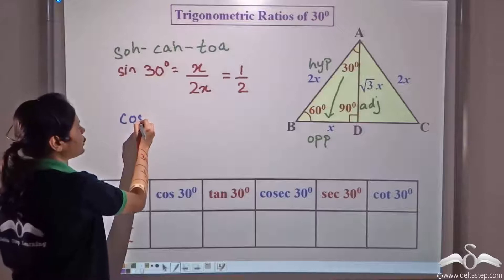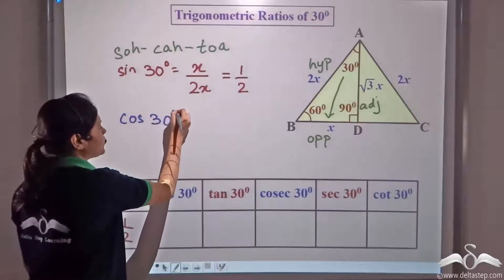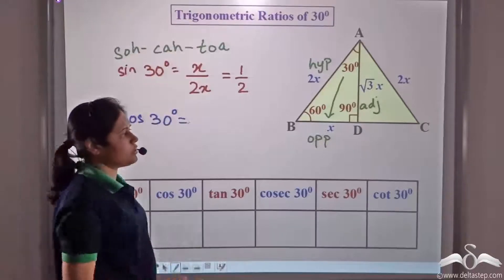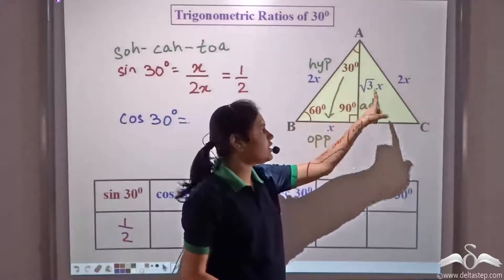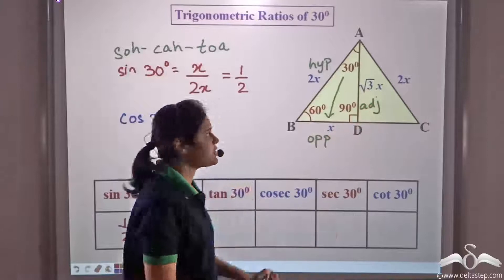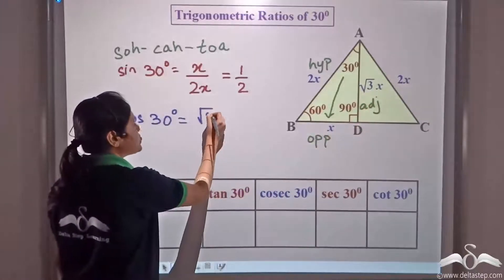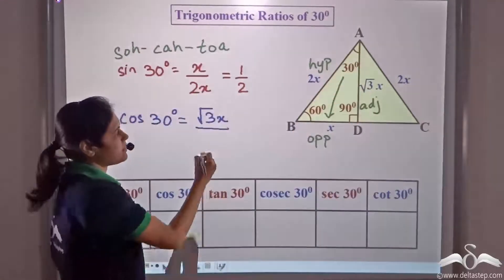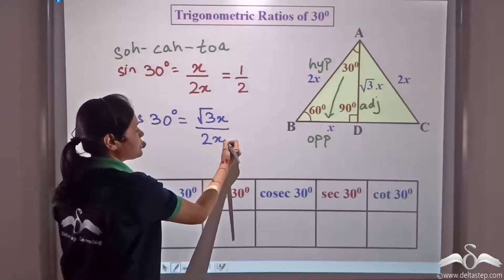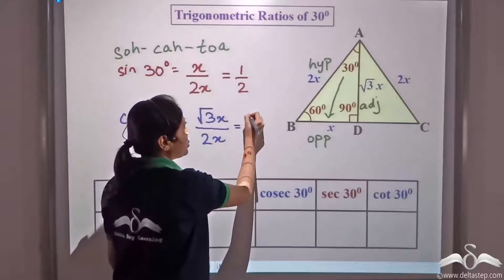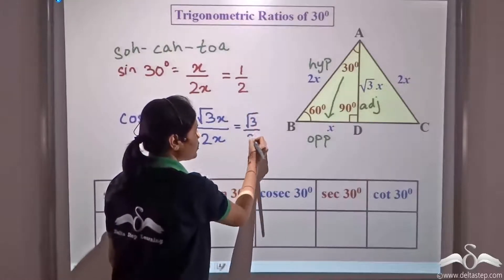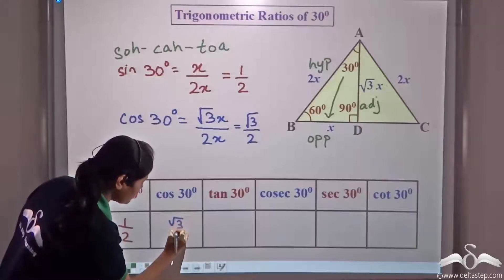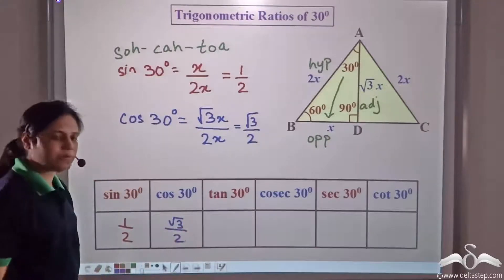Let us find cos 30 degree. Cosine is adjacent over hypotenuse. The adjacent side of the 30 degree angle is √3·x, and the hypotenuse is 2x. So cos 30 = √3·x / 2x = √3/2.